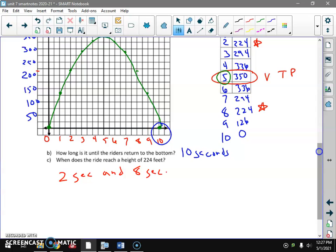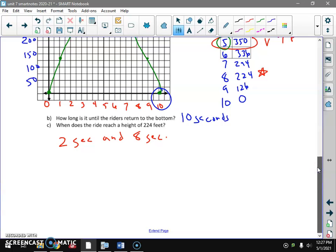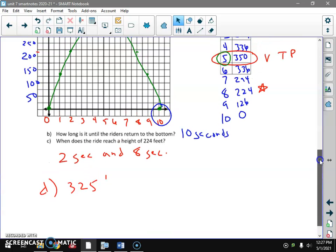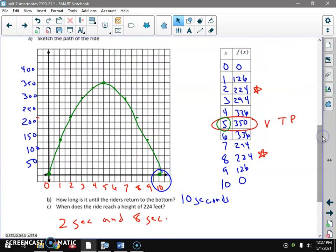Then I'm going to add one last question. What if I wanted to know 325 feet? You could estimate it. 325 feet is right here, halfway between 300 and 350. Here and here. You could say about four seconds and about six seconds just off that. Now we could use our calculator to find the intersection, but we don't really need to.